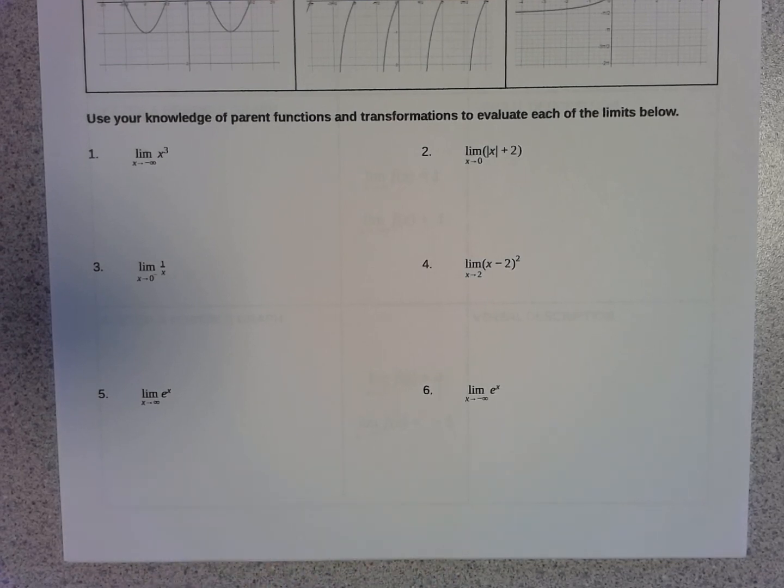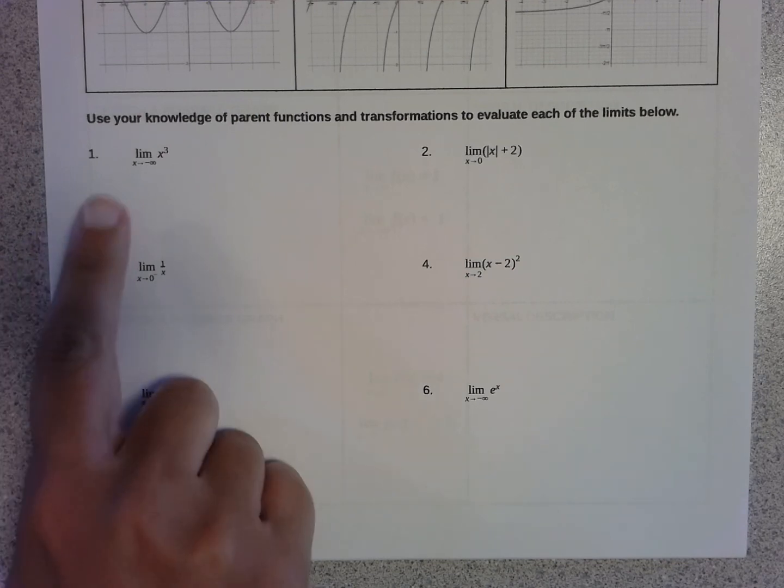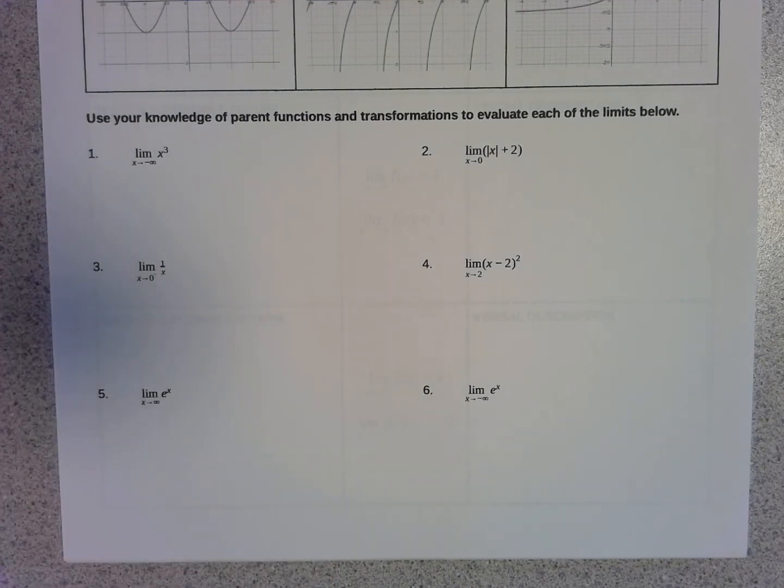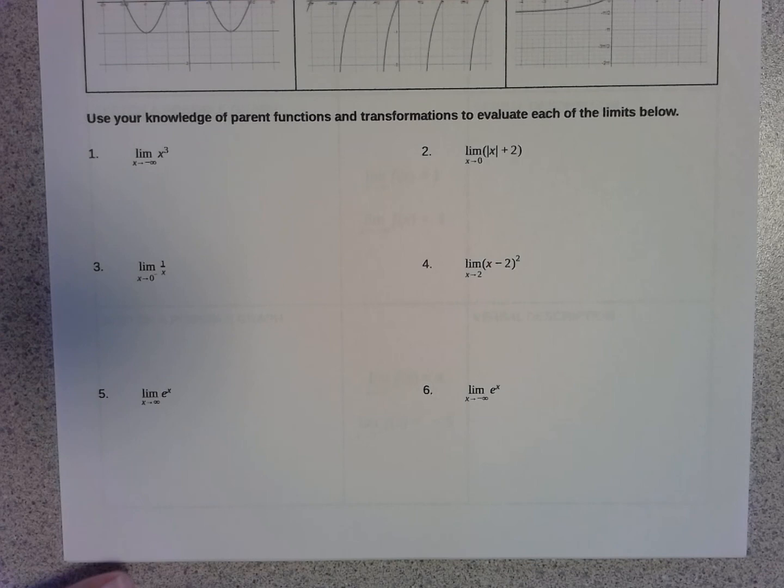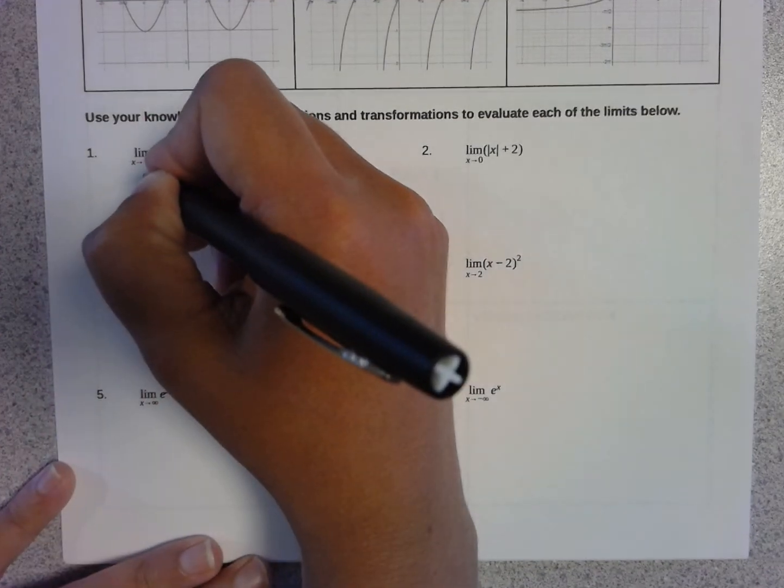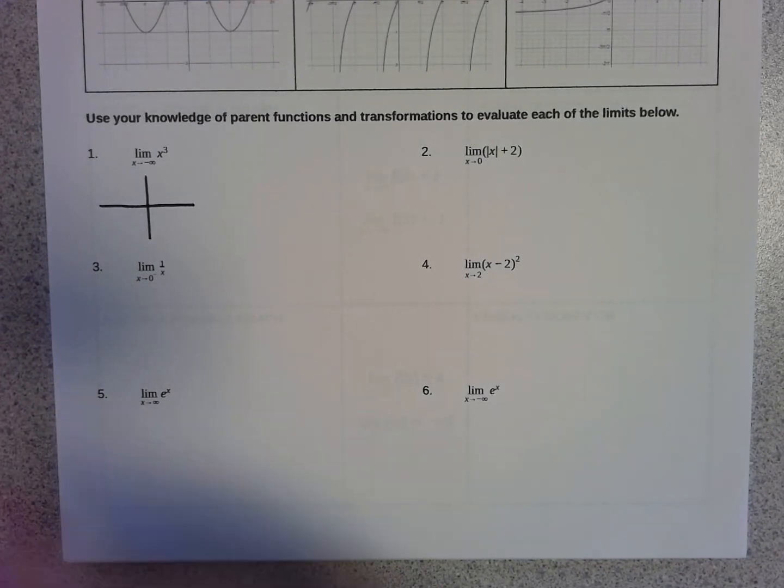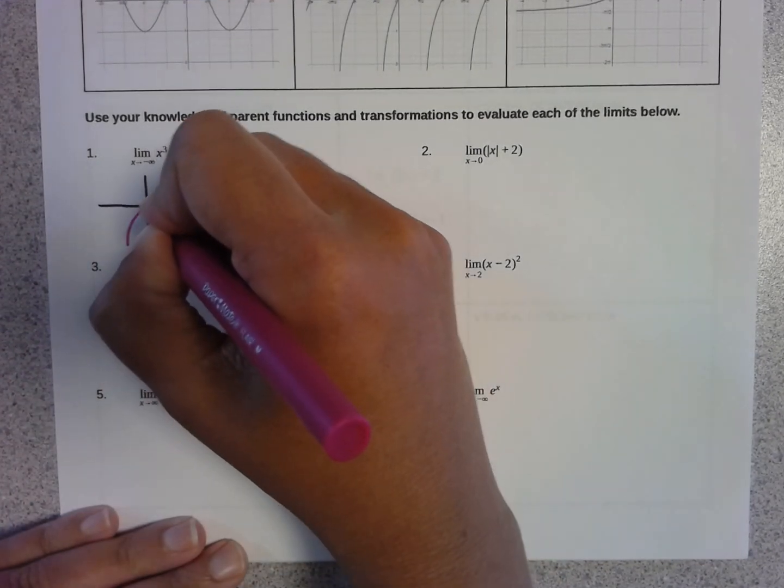But these are the types of questions that you would be expected to answer using this knowledge. So it says here, use your knowledge of parent functions and transformations to evaluate each of the limits below. So the first one says the limit as x is approaching negative infinity of the x cubed function. The first step here in my mind would be to sketch a picture of this graph.